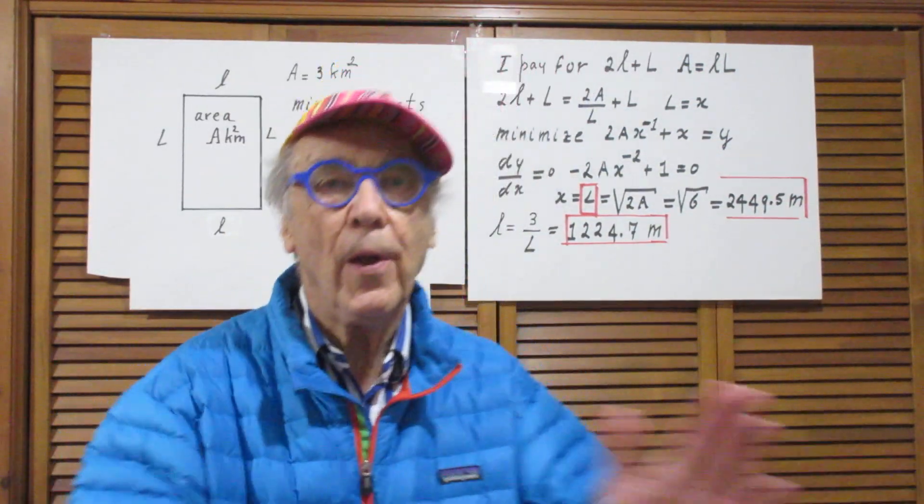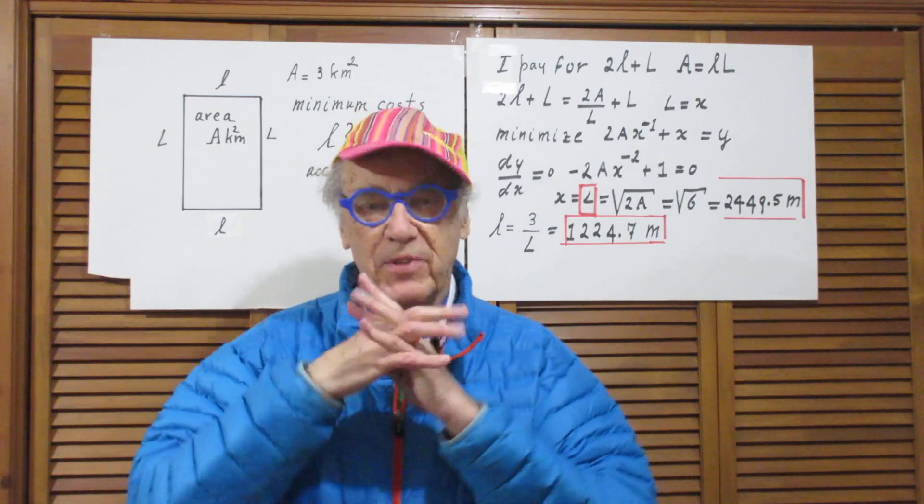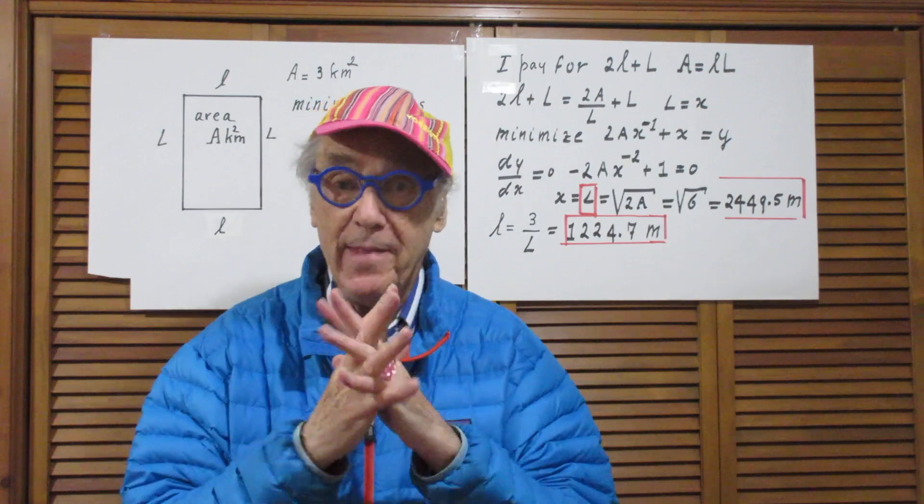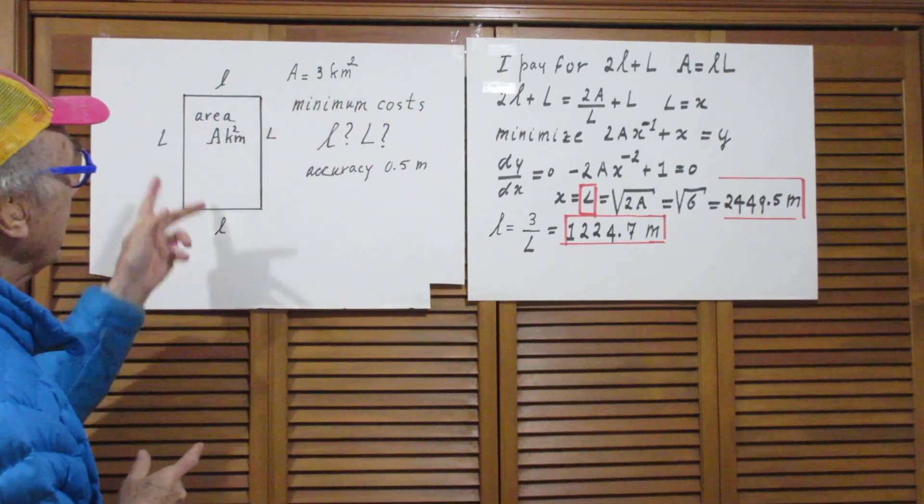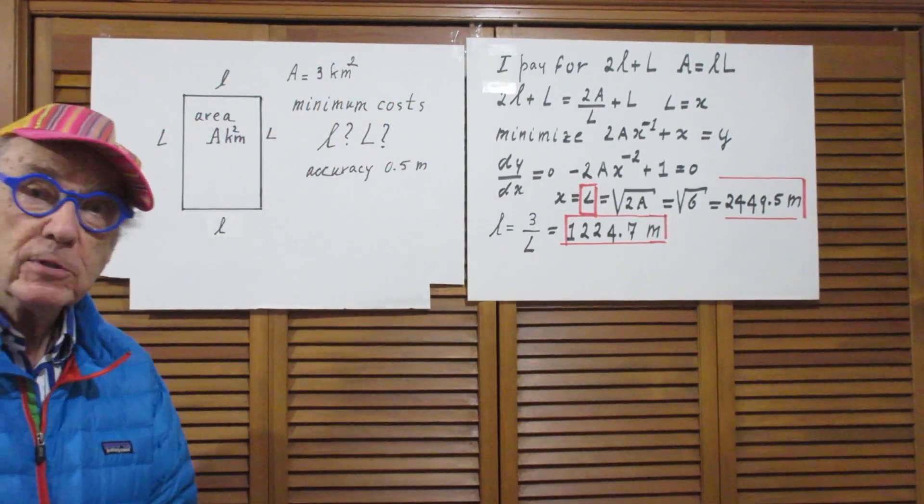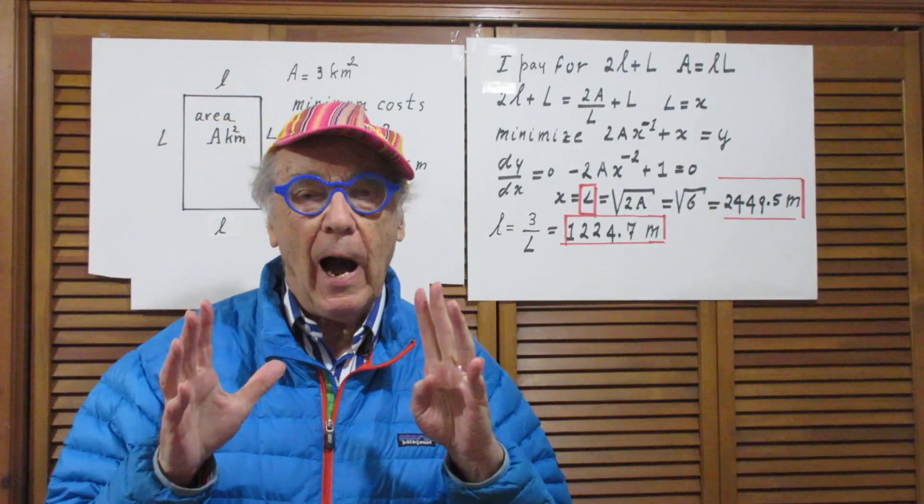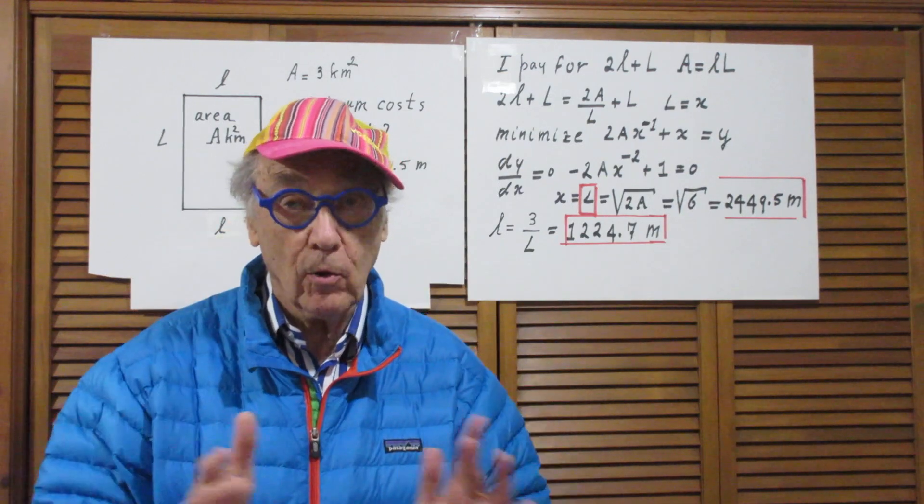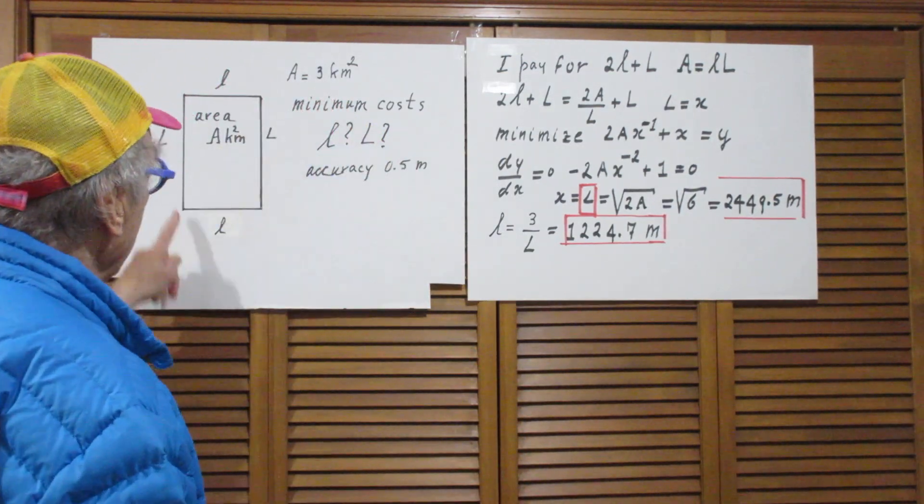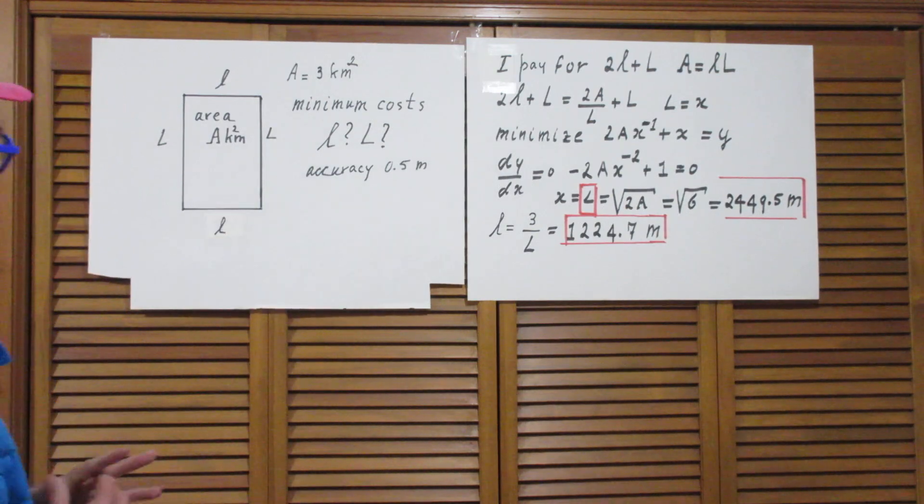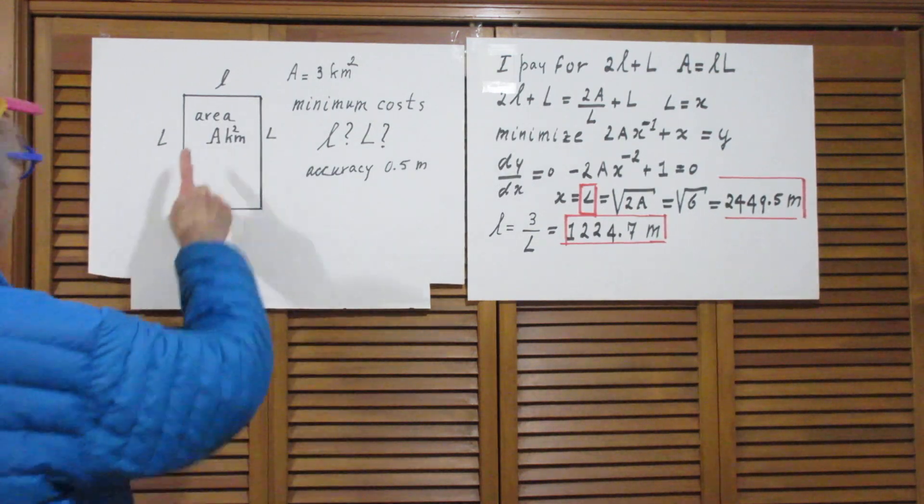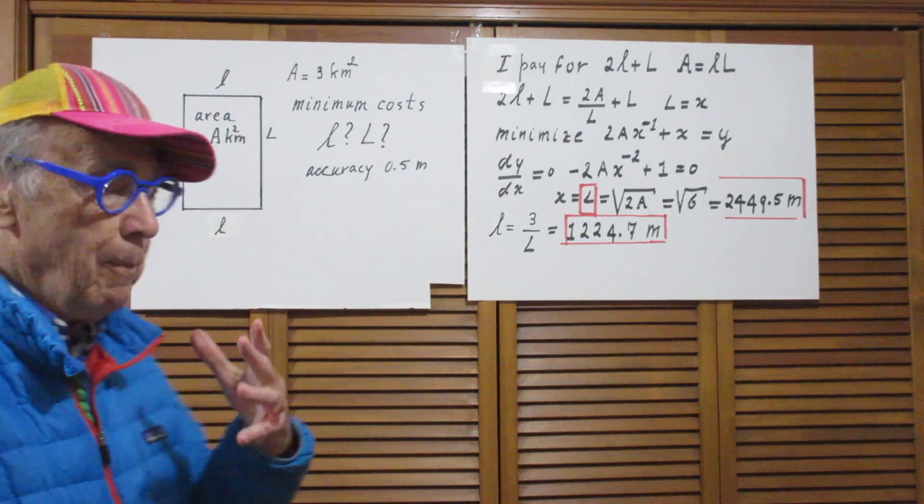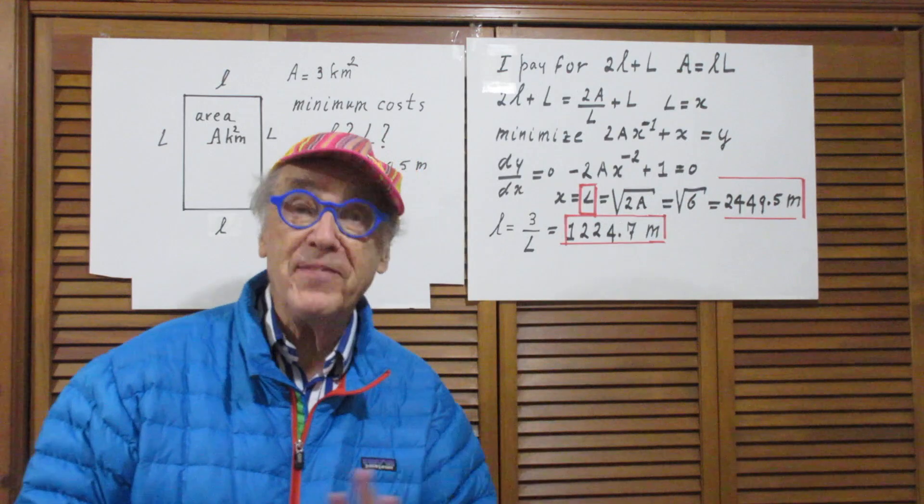Hello, solutions to this simple high school problem. I inherited a piece of land with an area of three square kilometers, but by law I had to choose the shape of a rectangle. So this is the shape of my piece of land, A square kilometers. By law I have to put a fence around it.